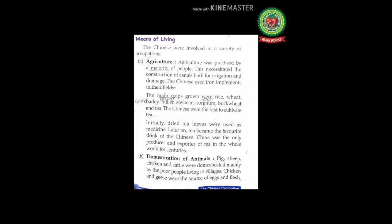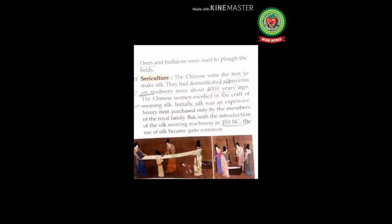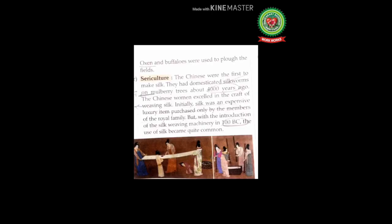Point B: Domestication of Animals. Pig, sheep, chicken, and cattle were domesticated mainly by the poor people living in villages. Chicken and geese were the source of eggs and flesh. Oxen and buffaloes were used to plow the fields. These animals were also a source of income — the people sold eggs and flesh of chicken and geese to earn income.